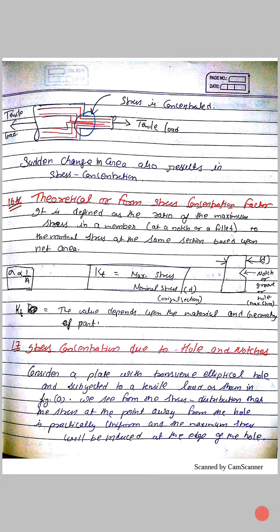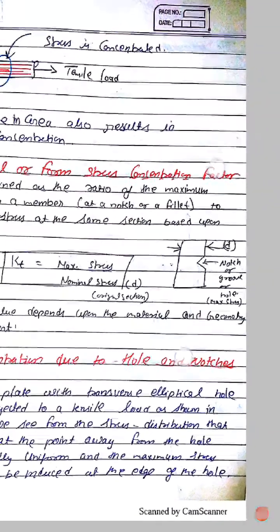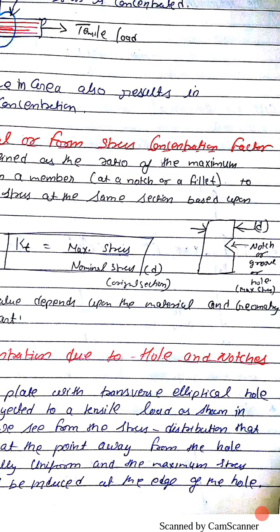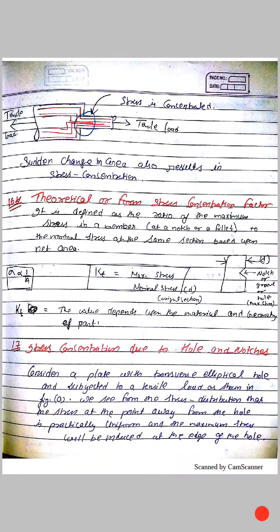Theoretical or Form Stress Concentration Factor: It is defined as the ratio of maximum stress in a member at a notch or a fillet to normal stress at the same section based upon net area. Kt is equal to maximum stress upon nominal stress of the original section.